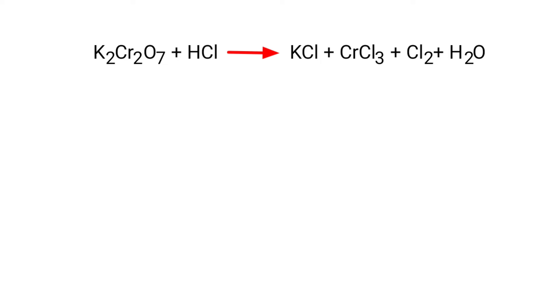First thing we do is give each compound a letter coefficient. aK₂Cr₂O₇ plus bHCl gives cKCl plus dCrCl₃ plus eCl₂ plus fH₂O.